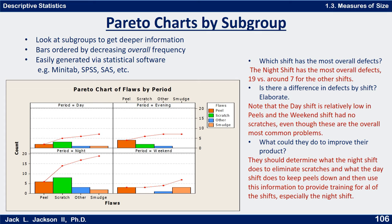It's because there are so many peels and scratches in the night shift and quite a few peels in the evening shift. So what could they do to fix their problems? I would look at the weekend shift and ask what they're doing to completely eliminate scratches, or look at the day shift to see what they're doing to keep peels so low. If we could figure that out, we can come up with a training program, starting with the night shift, which is the biggest problem.